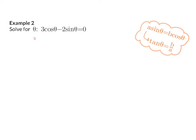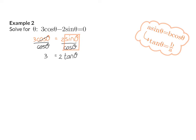In example 2, I start by moving the −2 sin θ to the right, giving sin θ = cos θ. I then divide both sides by cos θ. On the left, cos θ divided by itself gives 1, with the coefficient 3. On the right, sin θ divided by cos θ is tan θ, so I have 2 tan θ. Dividing by 2 gives tan θ = 3/2. Now it's in standard form, so we follow the four steps. My reference angle from the calculator is 56.31 degrees.